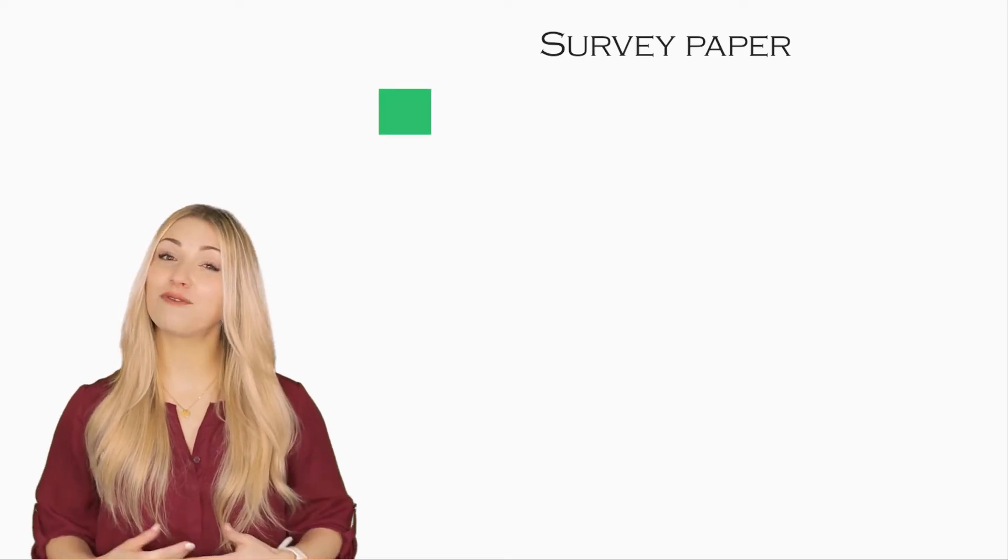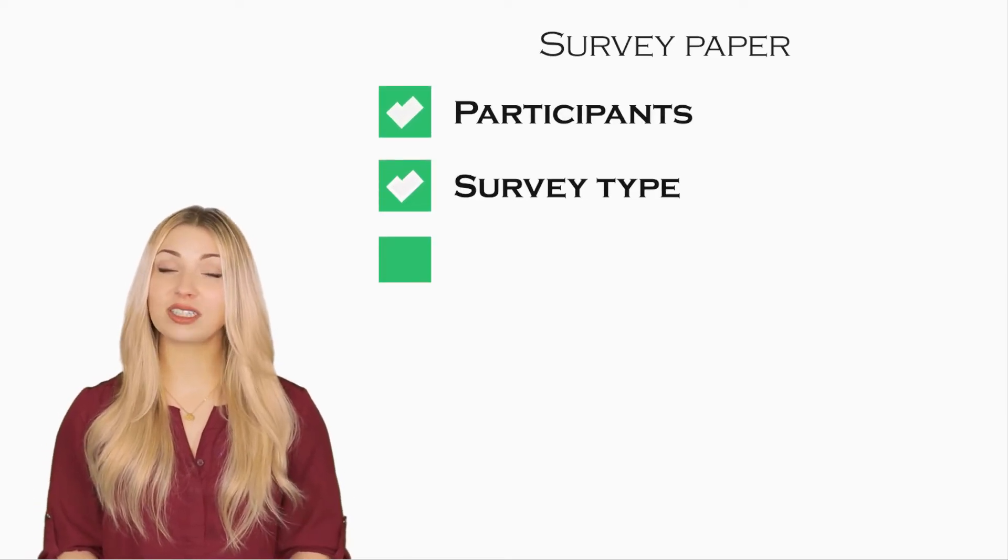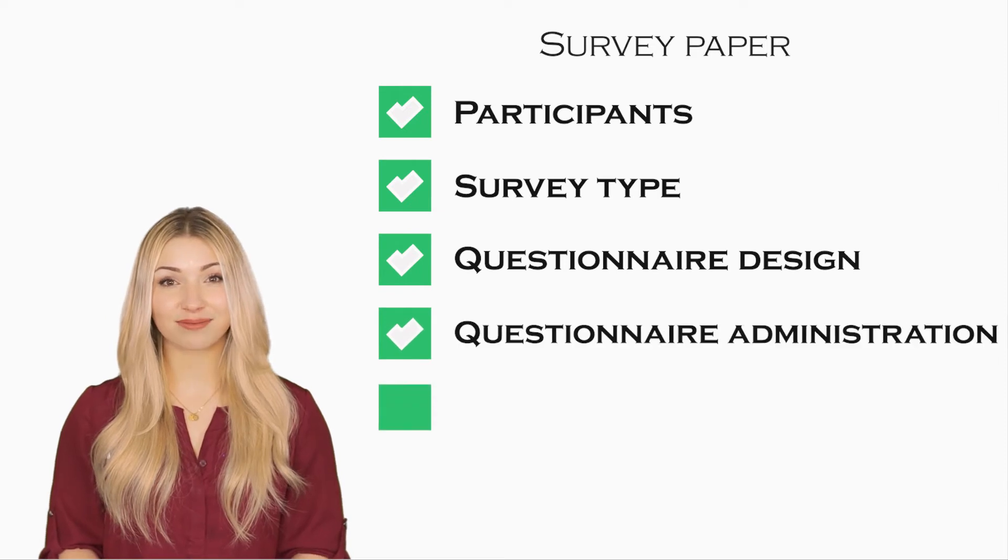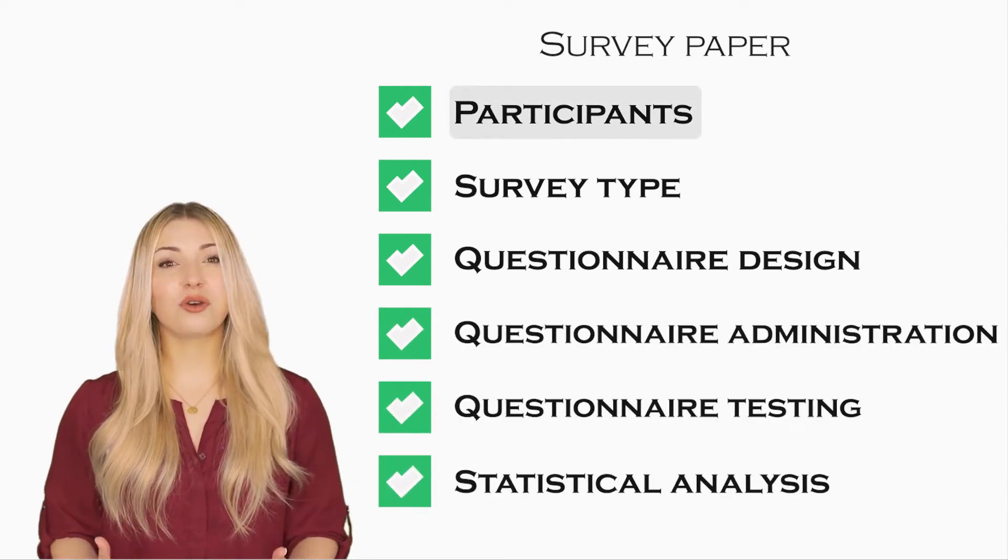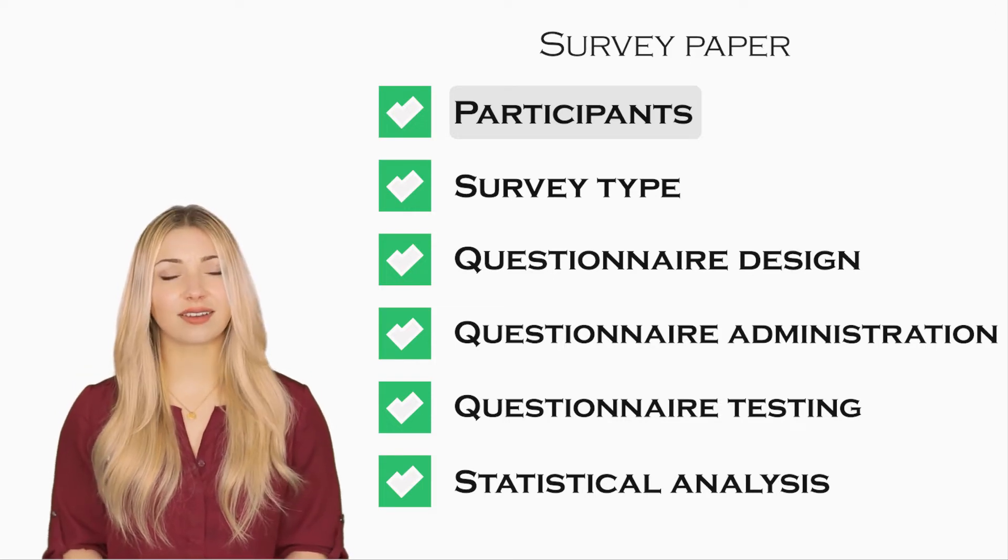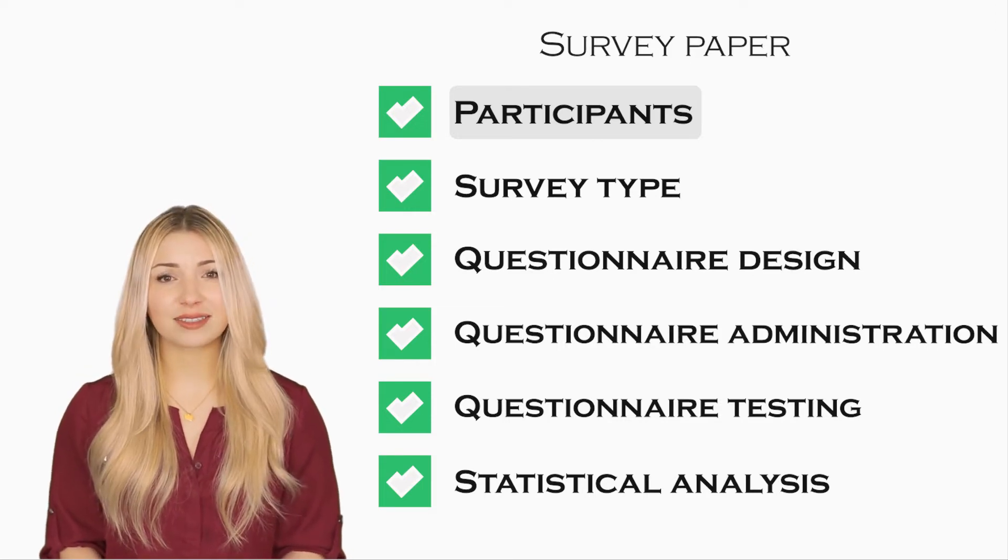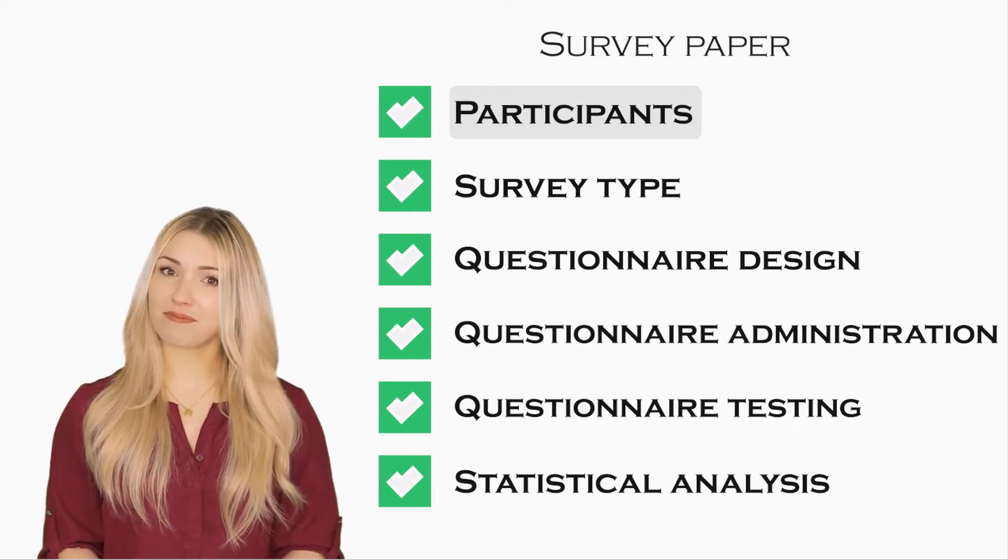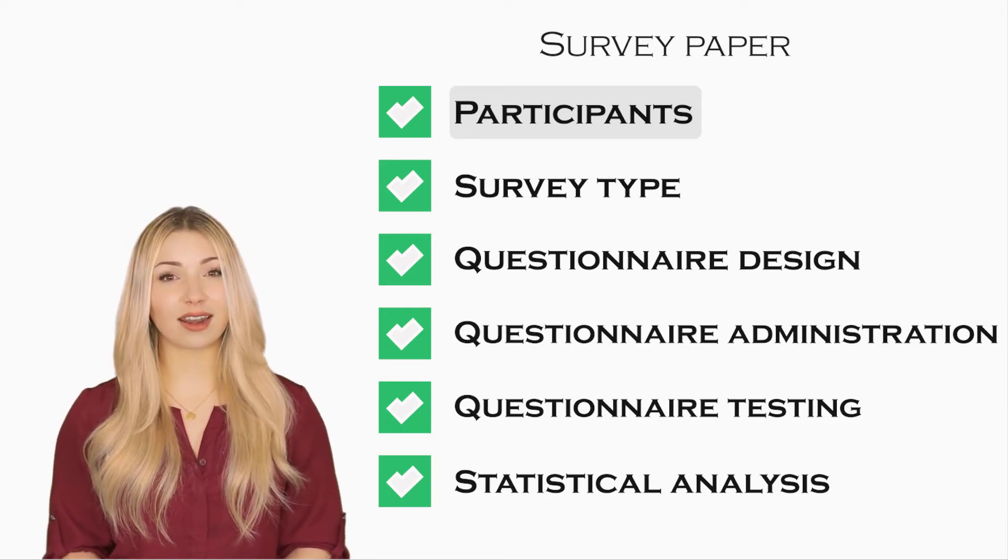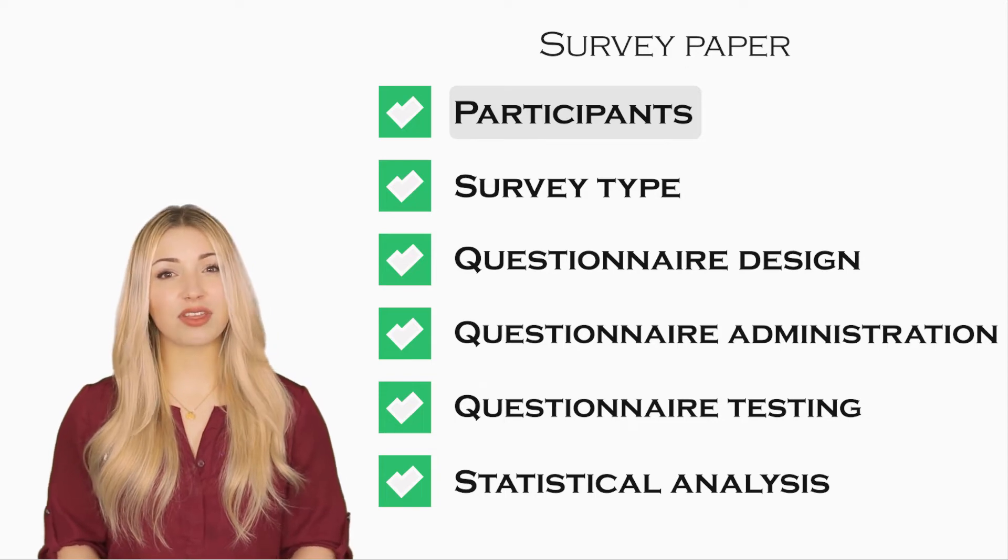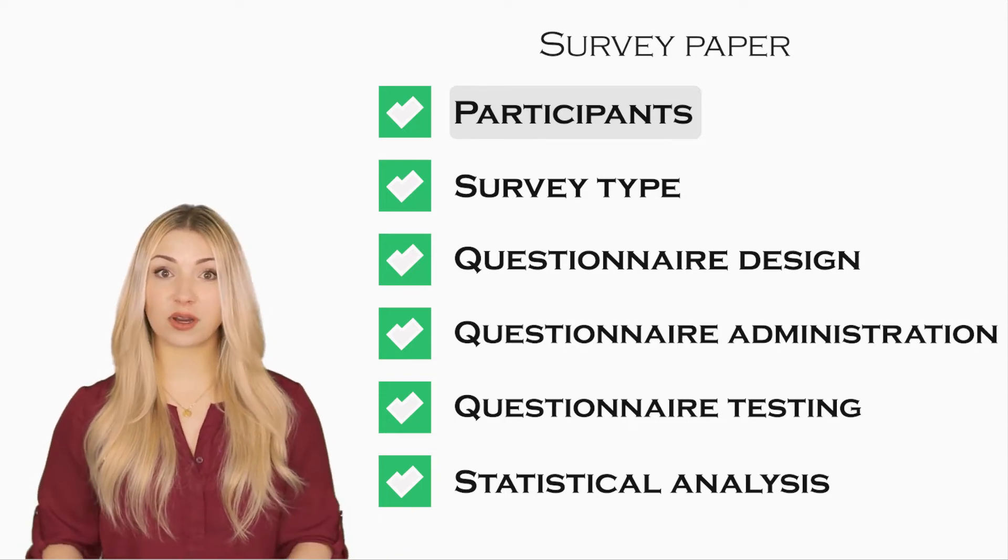If you are writing a survey paper, you would typically include the following information in your materials and methods section. You can start by talking about your participants. Who is your target population? What are their demographics? How did you recruit them? How did participants provide consent for your study? What sampling method did you use to select the participants?